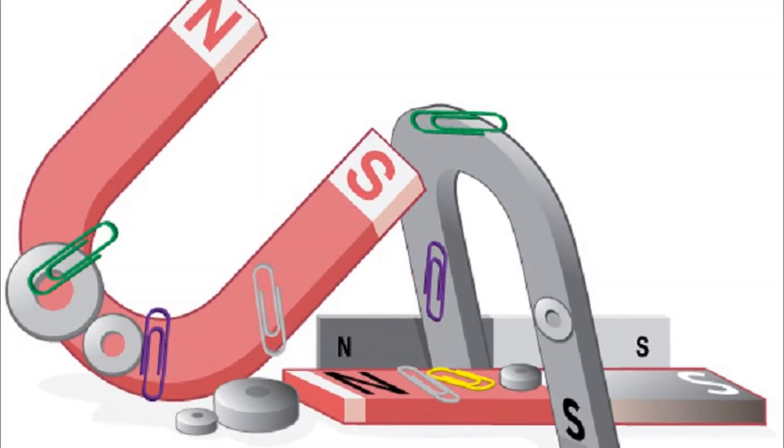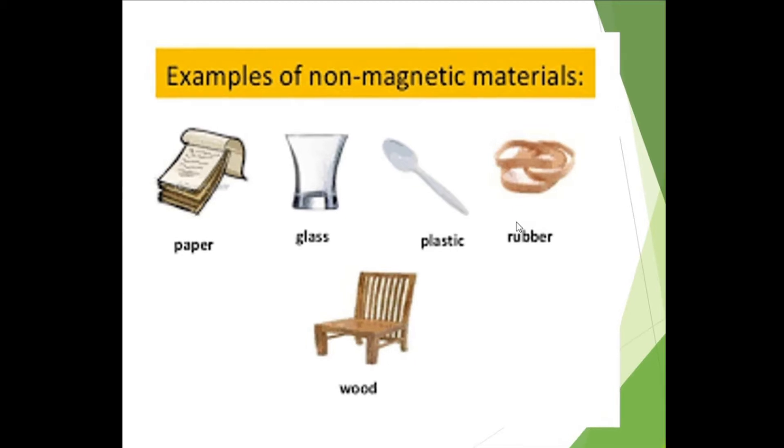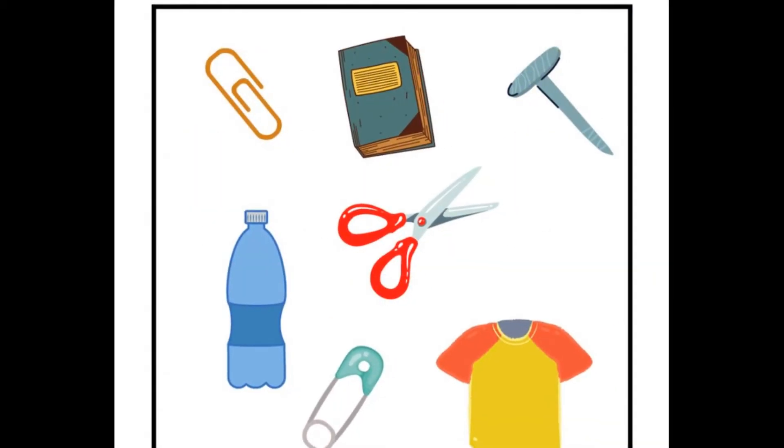Substances which get attracted by a magnet are called magnetic substances and substances that do not get attracted by a magnet are called non-magnetic substances. These cannot be magnetized either.